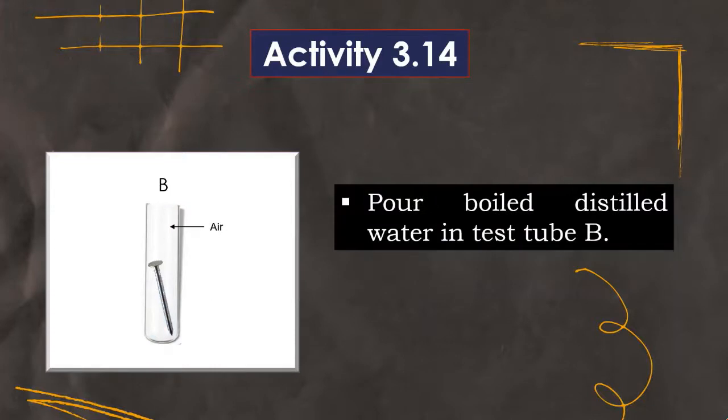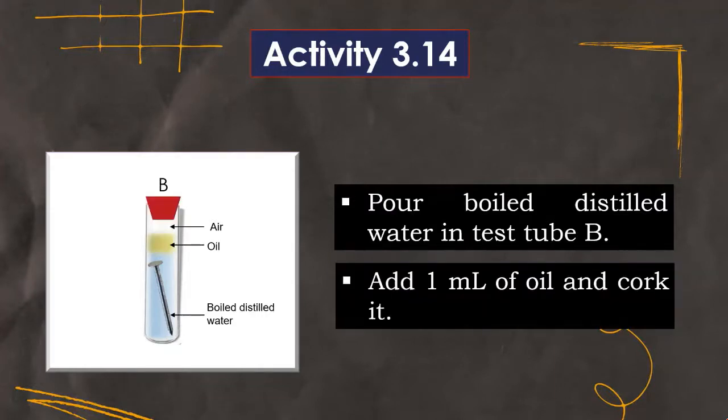Next step is pour boiled distilled water in test tube B, then add 1 ml of oil and cork it.